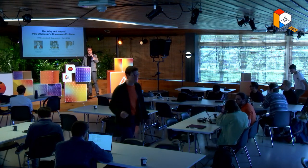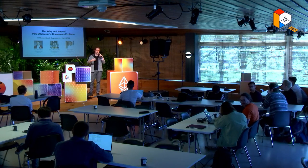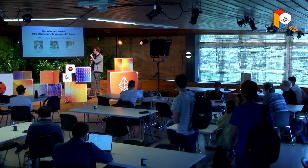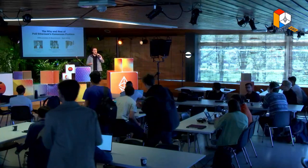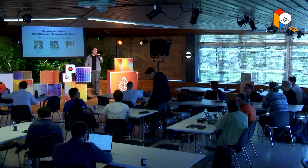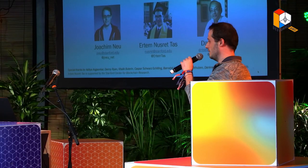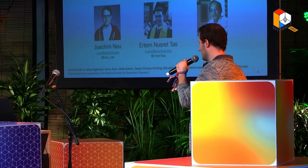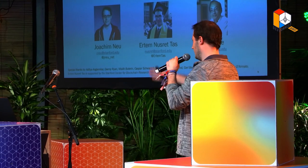Welcome everyone. The purpose of this talk is educational rather than presenting new results or new constructions. The topic is about what is, on a more abstract level, the consensus problem that proof-of-stake Ethereum is trying to solve, how did we get here, what are the challenges with the current construction, and what could be done to mitigate them. This is joint work with Nusred, who is also in the audience, and with my advisor David, who just spoke. There's a long list of folks from the Ethereum Foundation who I want to give special thanks to.